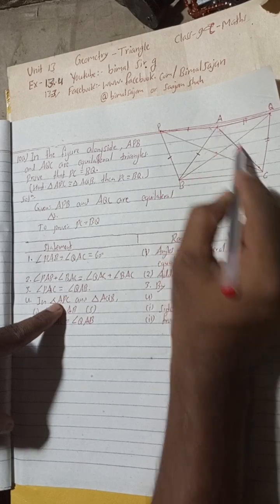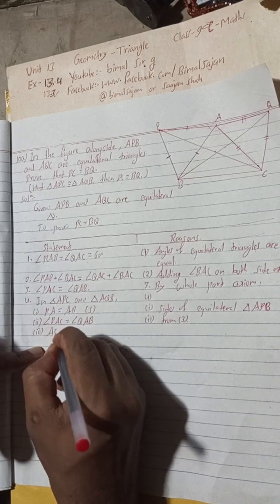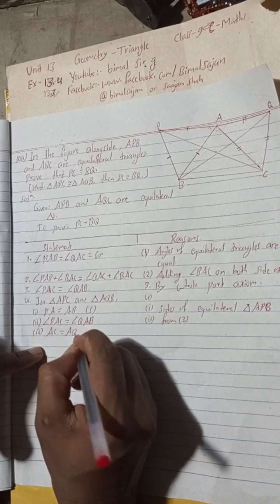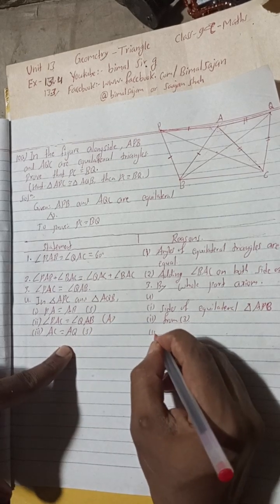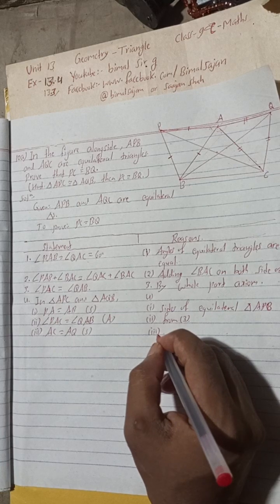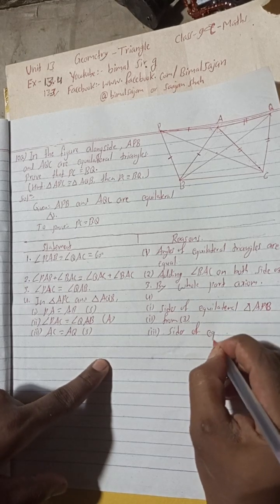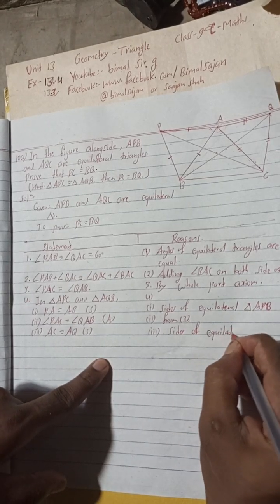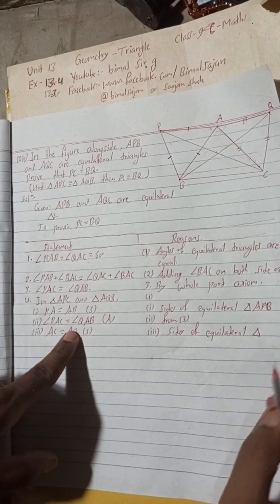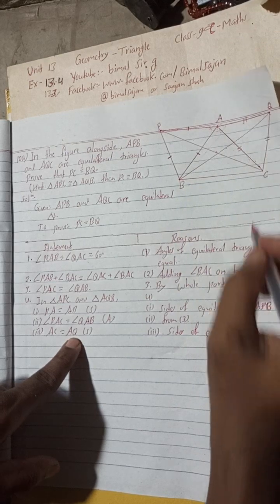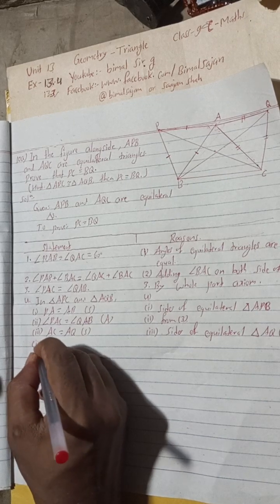Now we'll go to the side. In triangle APC, this side AC is equal to this side AQ in triangle AQB. So this is side, angle, and this is side. Number three reason: sides of equilateral triangle AQC.